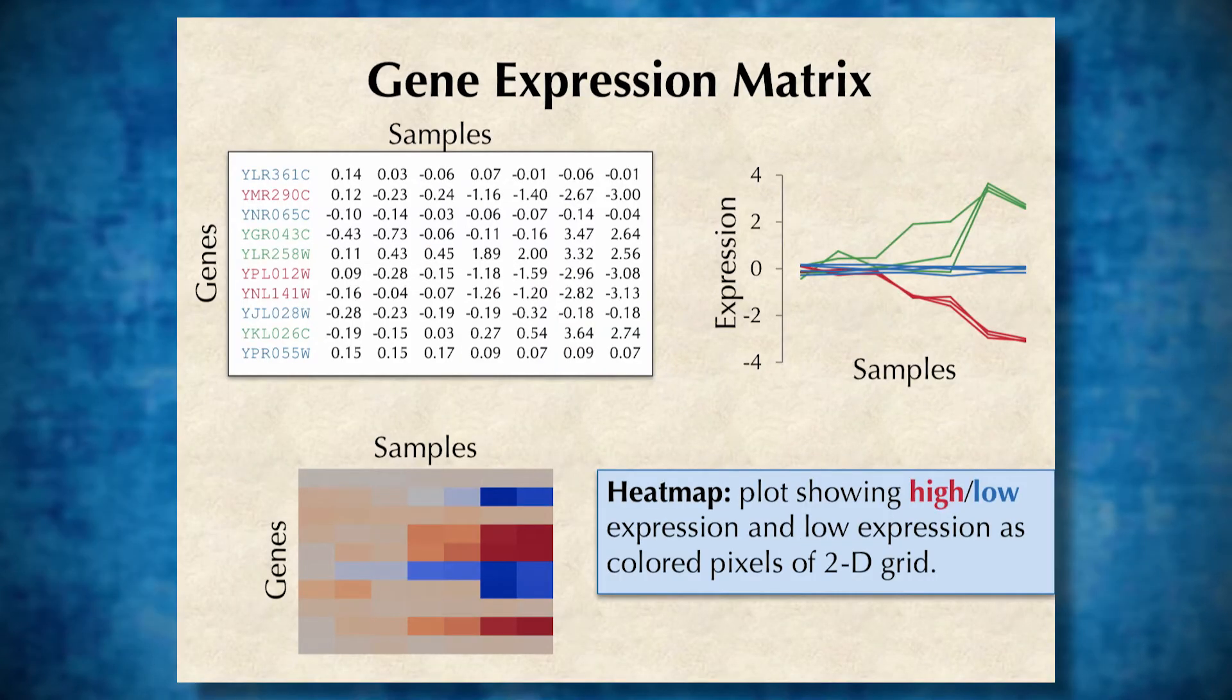We can then take our gene expression matrix and create what's called a heat map to make it easier to visualize what genes are up or down regulated, in other words, have high or low expression, as a function of different experimental conditions.